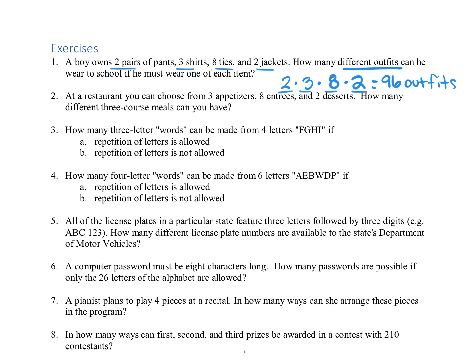For number two, we're looking at a three course meal that has an appetizer, an entree, and a dessert. So again, fundamental counting principle: three ways to choose the first thing, eight ways to choose the next one, two ways to choose the dessert. That gets a total of 48 different meal combos we could get.